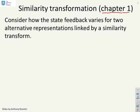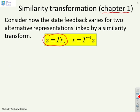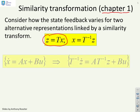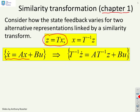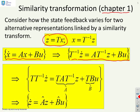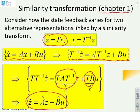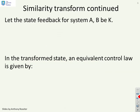Similarity transformations were covered in the first section of this chapter on state space. If you create a new state z given by transformation T times the original state x, then originally you had ẋ = Ax + Bu, and you can create an equivalent state space model: ż = Âz + B̂u, where  = TAT⁻¹ and B̂ = TB.